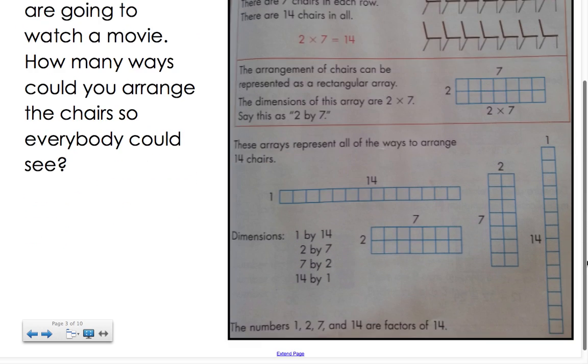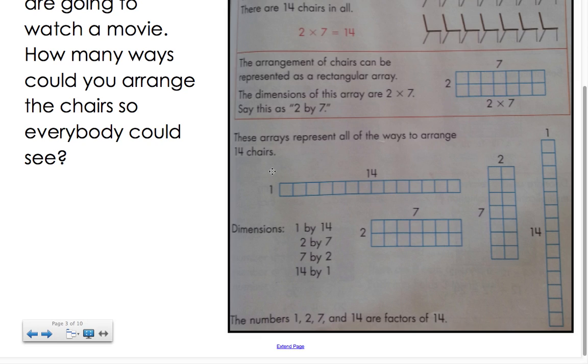There are other ways that we could arrange 14 chairs. Here, we have a 1 by 14, 1 row with 14 chairs. We have a 2 by 7, 2 rows with 7 chairs in each. A 7 by 2, 7 rows with 2 chairs in each. And a 14 by 1, that's 14 rows with 1 chair in each row. These numbers 1, 2, 7, and 14 are factors of 14 because all of these numbers could be found in the dimensions of our arrays making a product of 14.